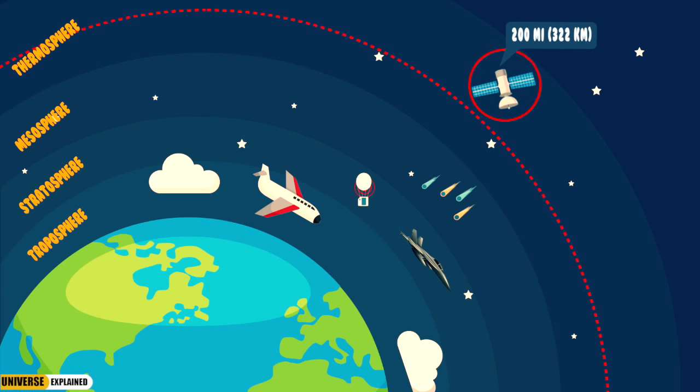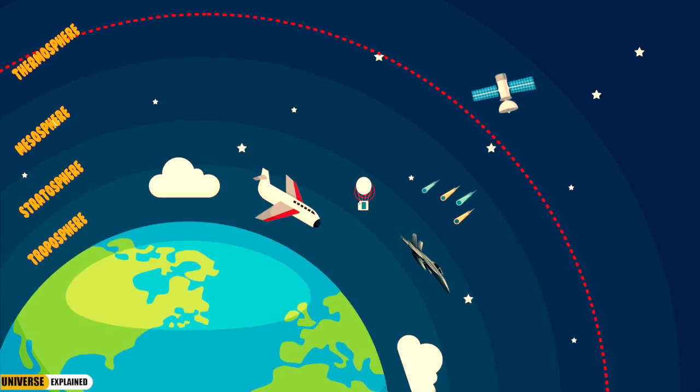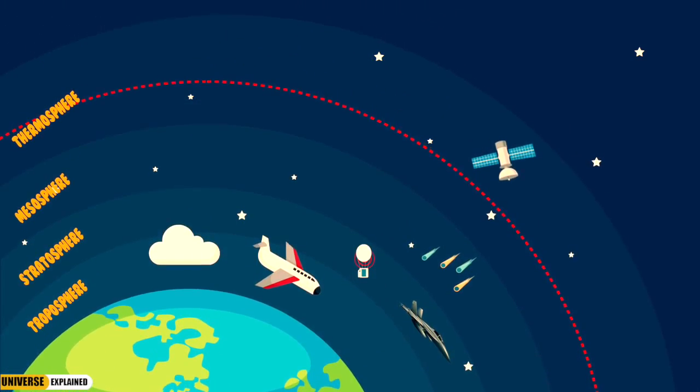At 200 miles we reach the International Space Station. 230 individuals from 18 countries have visited this station so far. Above the thermosphere is the exosphere.